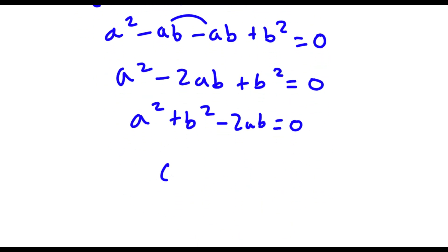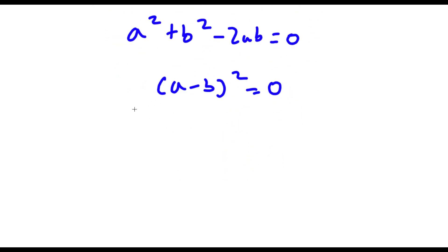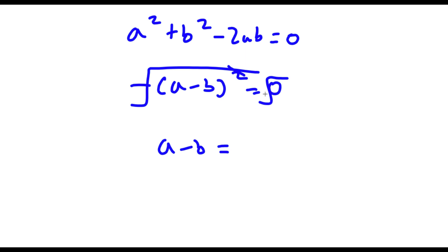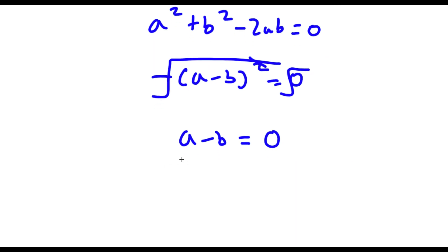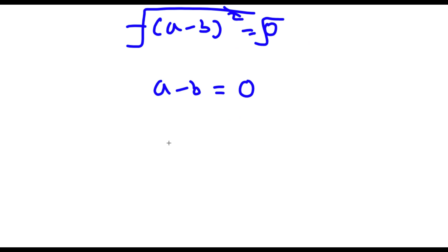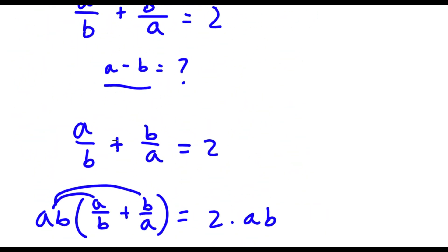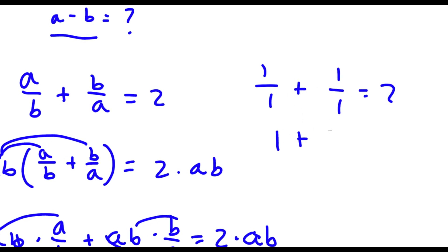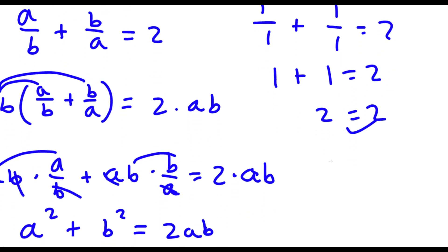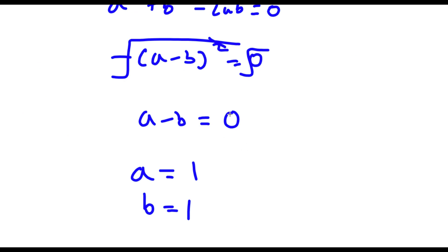So now I'm going to change this back to a minus b squared is equal to 0. And now I'm going to take the square root on both sides. The square root of a minus b squared — these two cancel out — so I'm left with a minus b is equal to 0, since the square root of 0 is 0. Now we've found our value of a minus b, which is 0. To check, let's plug in a equals 1 and b equals 1 into our original equation: 1 over 1 plus 1 over 1 equals 2, which gives 1 plus 1 equals 2. This is correct, so our answer is confirmed.